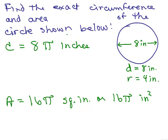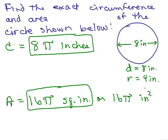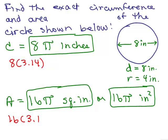And again, we can approximate the answer. These are the way you would write the exact answer for both the circumference and area, but if we're going to approximate it, we could say, well, 8 times 3.14, and for the area, we're going to do 16 times 3.14.